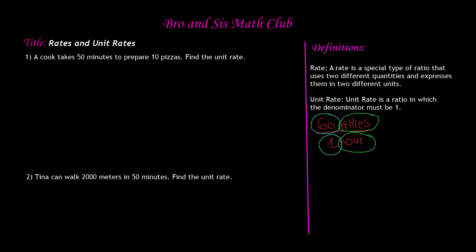Now if we look at our first example, it says a cook takes 50 minutes to prepare 10 pizzas. Find the unit rate. Now, we know what a rate is, but what is a unit rate? Here it says, unit rate is a ratio in which the denominator must be 1.